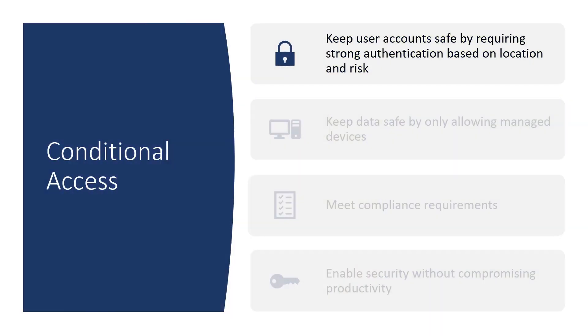Let's talk about some of the higher-level use cases that people use conditional access policy for. One of the most common ones to get started with is making sure that your identities are secure — ensuring it's the right user accessing your information. This can be requiring strong authentication, or requiring it based on conditions like being outside the corporate network or if an elevated risk is detected, which gives you a fine level of control when authoring these policies.